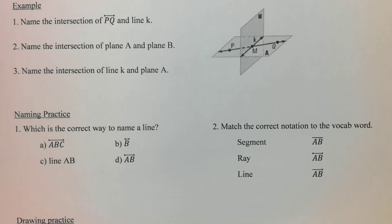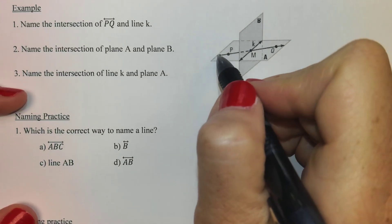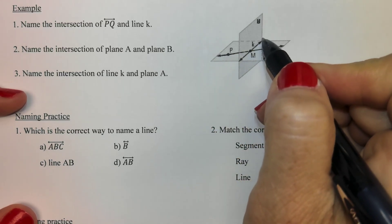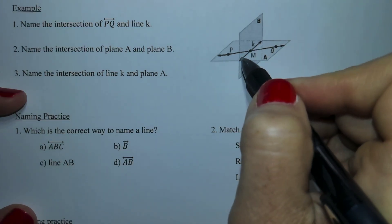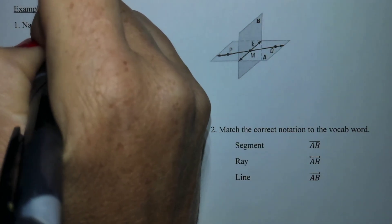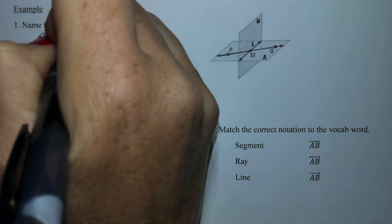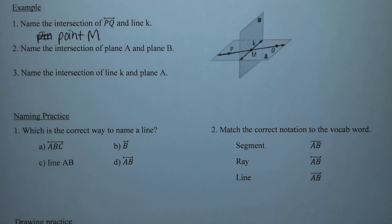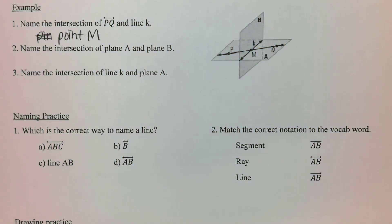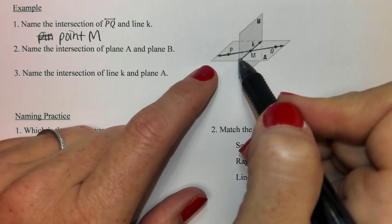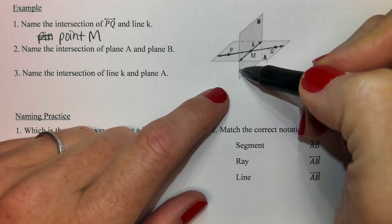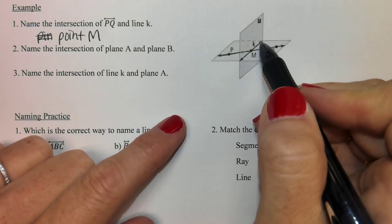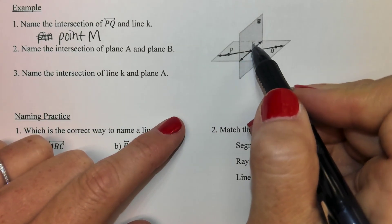Here we're going to name some intersections. Name the intersection of line PQ and line K. Here's PQ — tracing it — and line K right there. When those two hit each other, they intersect at point M. Next, the intersection of plane A and plane B. Plane A is the flat horizontal one; plane B is the one standing up. When two planes hit, they make a line. So I just have to figure out where they hit each other — it's line K.